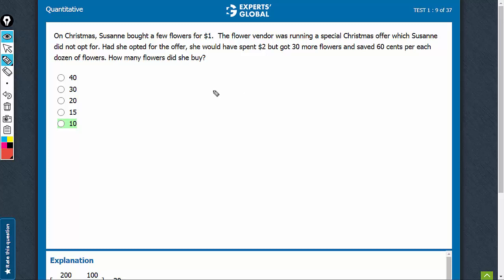Let's deal in cents. So, two quantities Q2 minus Q1 is equal to 30 more flowers.